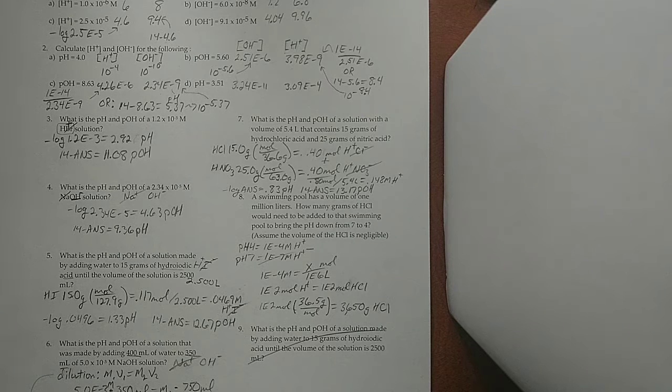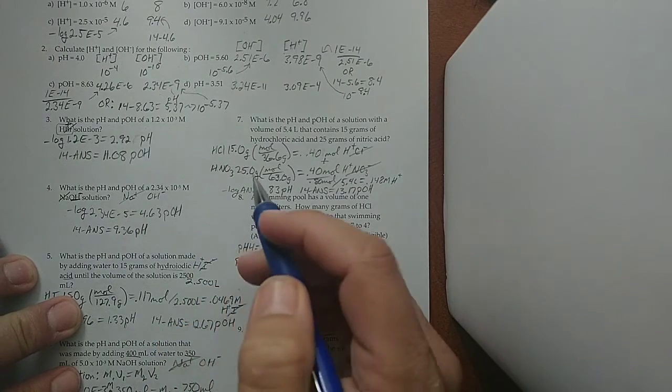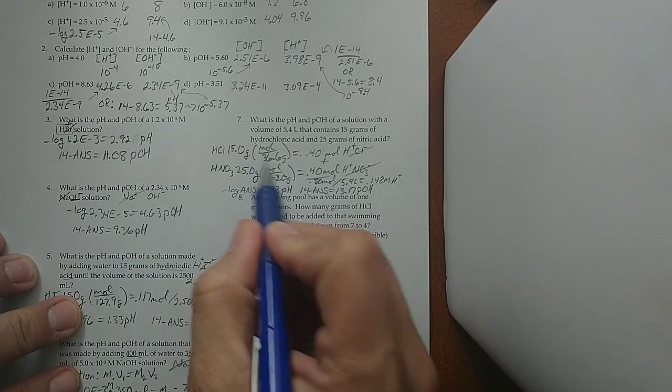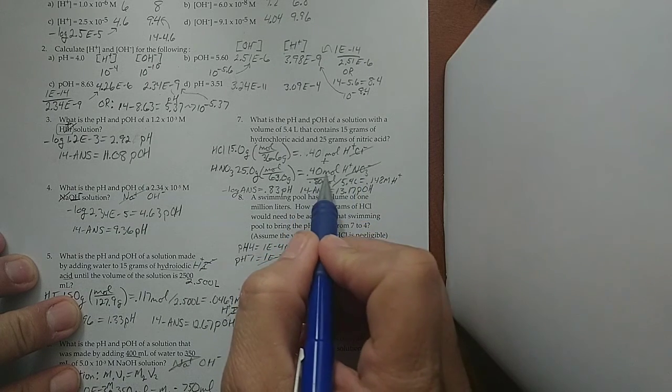Well, how much H⁺ is there? Well, how many grams was there? There was this many grams and that many grams. We'll find the molar mass. We'll divide and find the moles of the acid overall, find the moles of the acid overall.